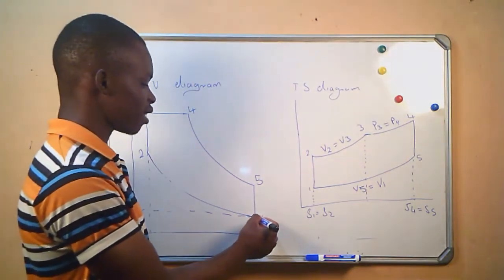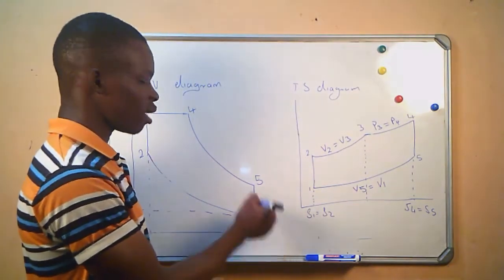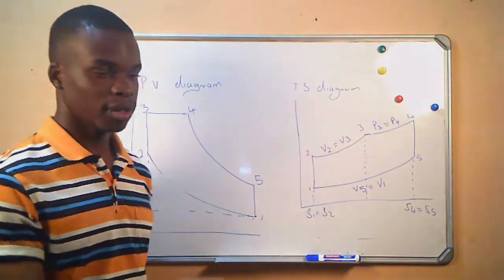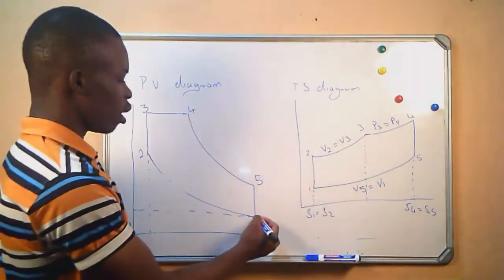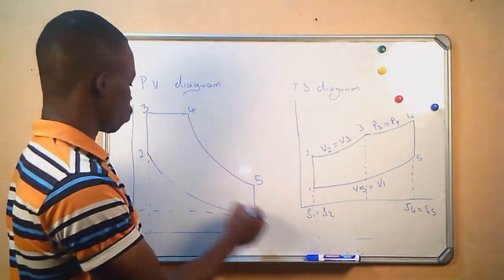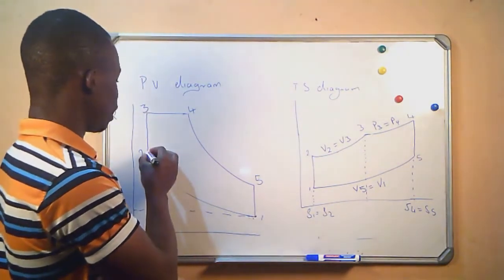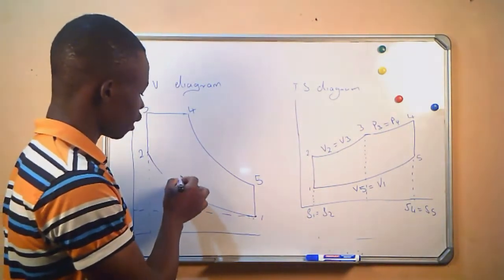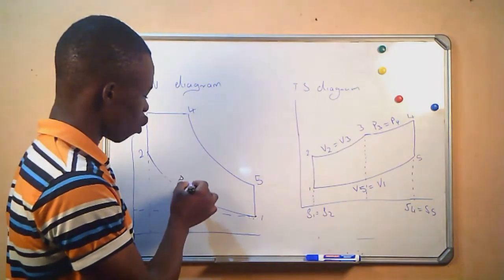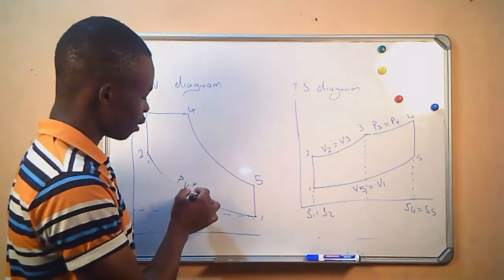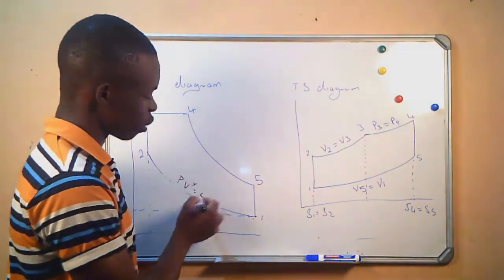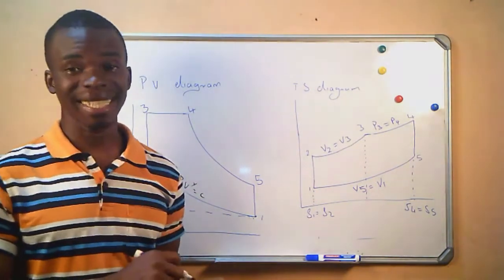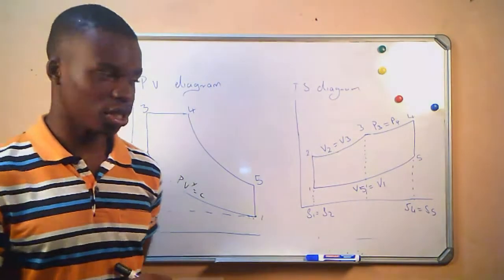Therefore we will start from the compression. From 1 to 2, this is our compression taking place using the law PV raised to gamma equals to C, which is the adiabatic compression.